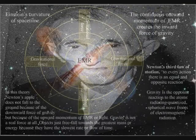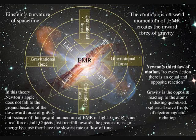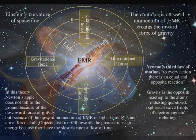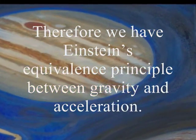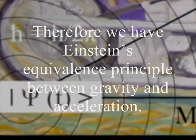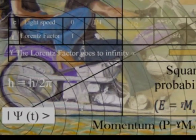In this theory, gravity is a secondary force to the electromagnetic force. Objects just freefall towards the greatest mass or energy because it has the slowest rate that time flows.